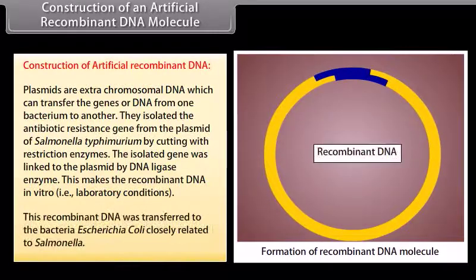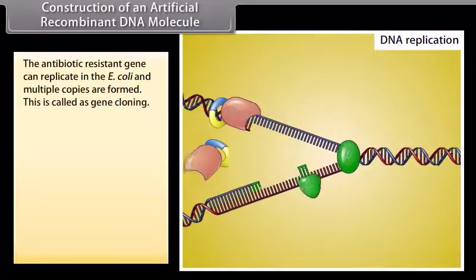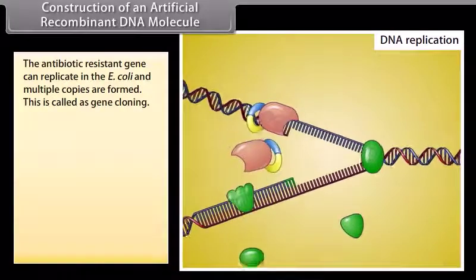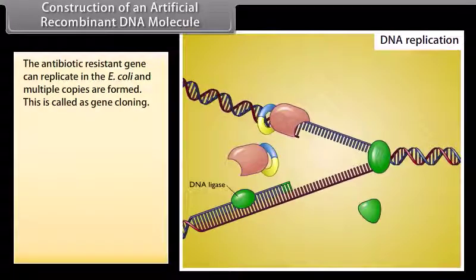This makes the recombinant DNA in vitro, that is laboratory conditions. This recombinant DNA was transferred to the bacteria Escherichia coli, closely related to Salmonella. The antibiotic resistance gene can replicate in the E. coli and multiple copies are formed. This is called as gene cloning.